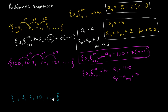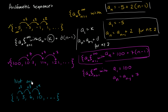Now is this last sequence arithmetic? We start at 1, then add 2, then add 3, then add 4. This is an immediate giveaway — we are adding a different amount every time, so this is not an arithmetic sequence.